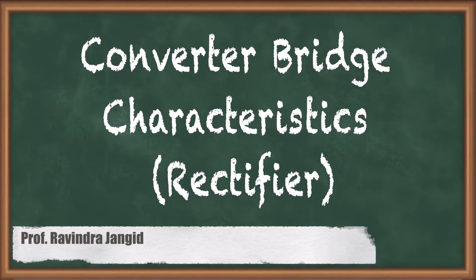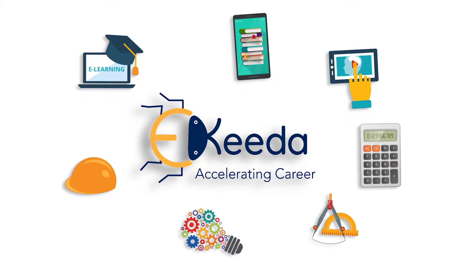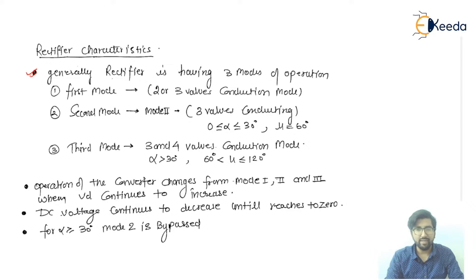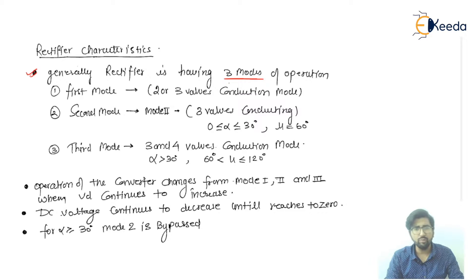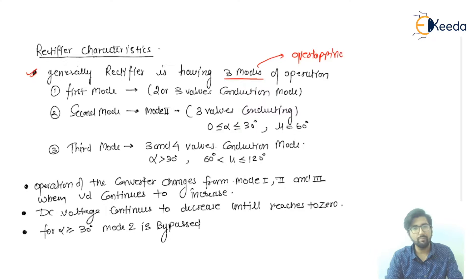The rectifier has three modes of operation, which we have already discussed: mu less than 60°, mu equal to 60°, and mu greater than 60°. The three modes of conduction depend only on the overlapping operation of thyristors.